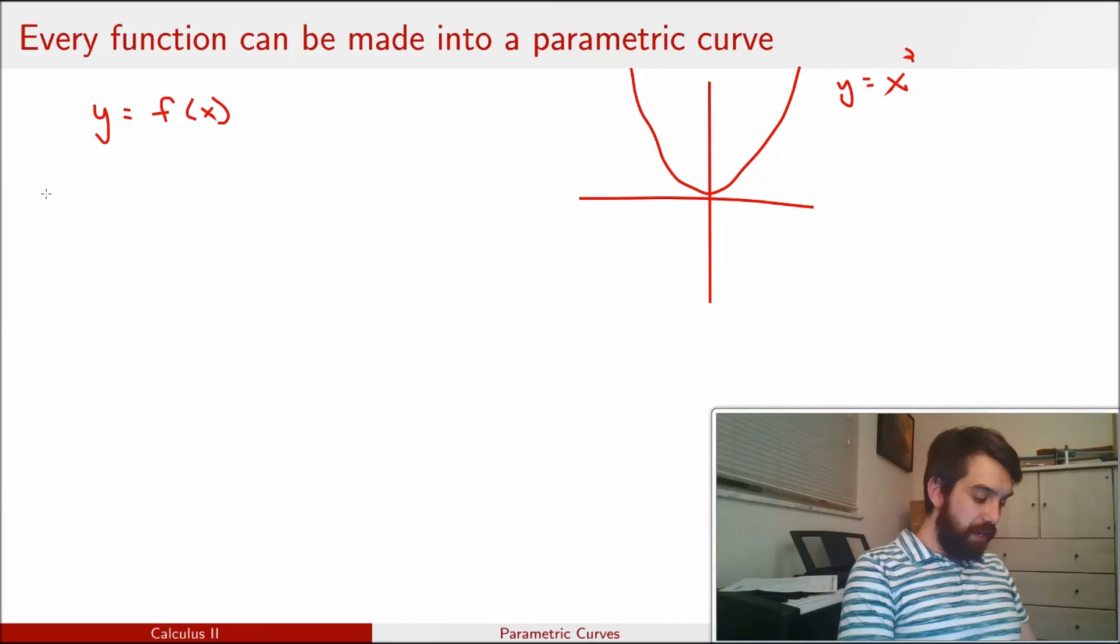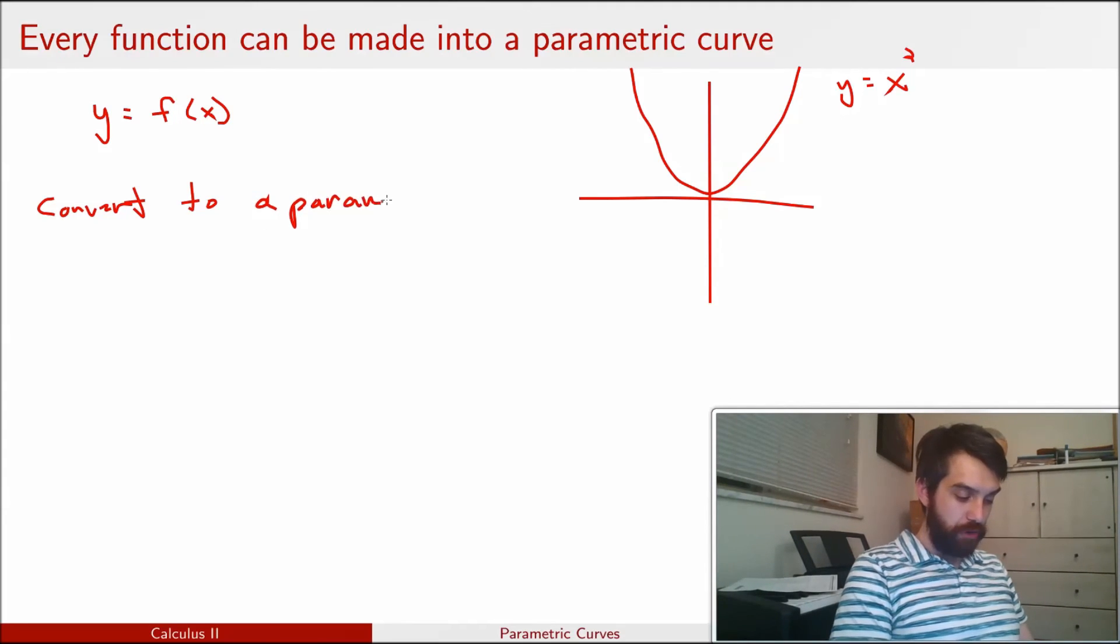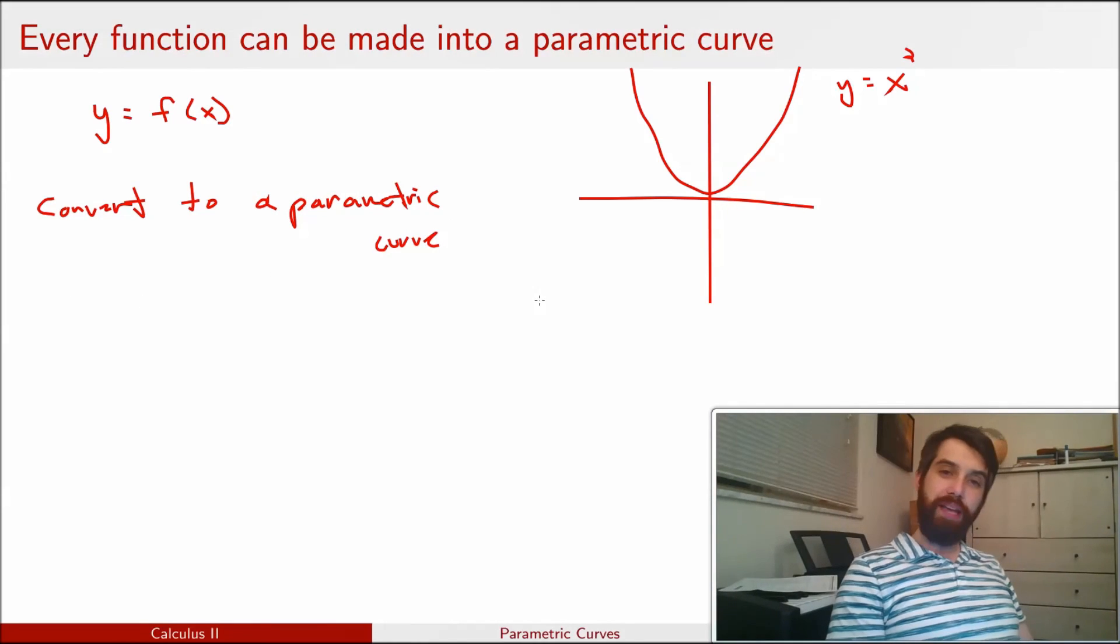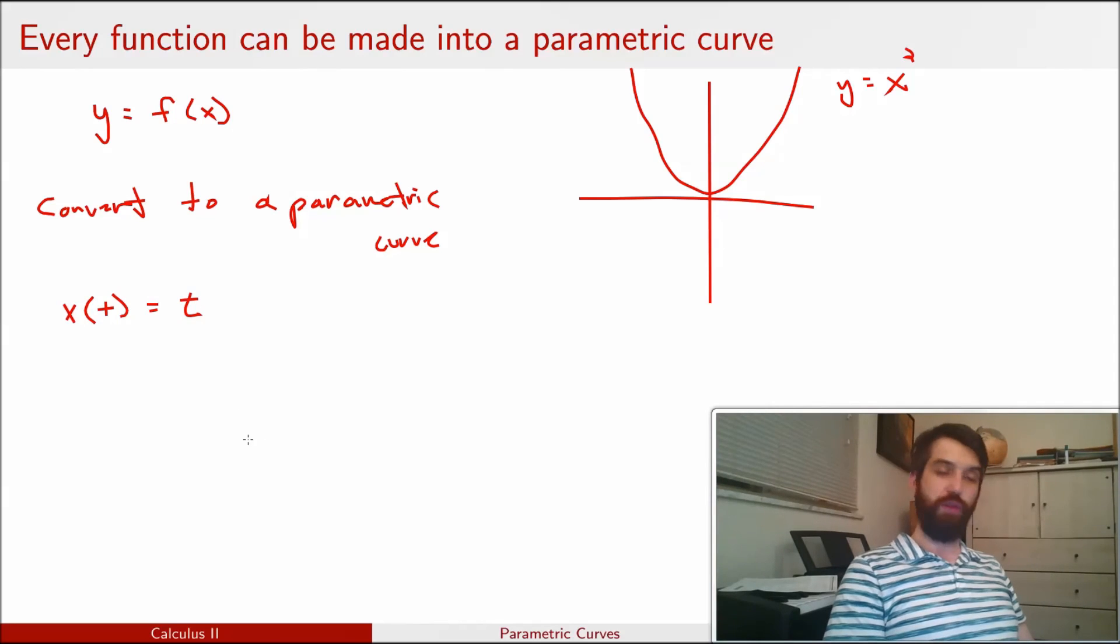So I can convert any function, any function at all, I can convert to a parametric curve by simply taking that the x variable as a function of t is just itself, is just going to be t. So in other words, I just relabeled it. I used to call it x, now I call it t.